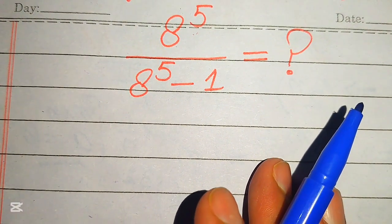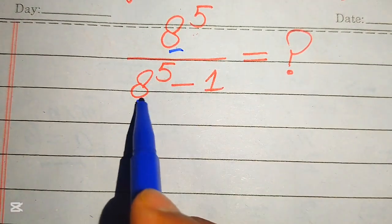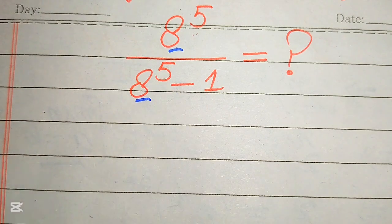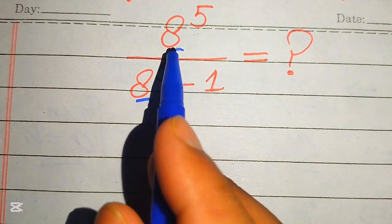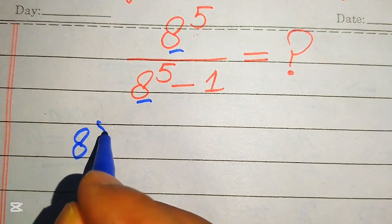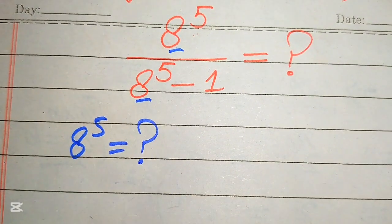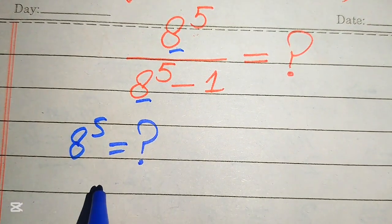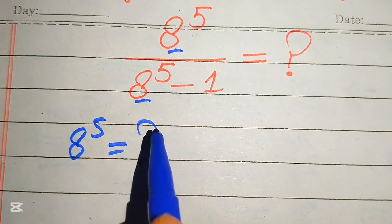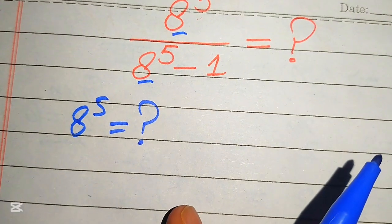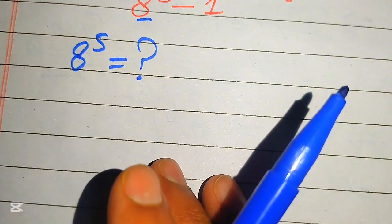In order to simplify this algebraic expression, we need to focus on the numerator and denominator. First, we need to find the value of 8 to the power of 5. At the end, we can put this value in and get our final simplified form.